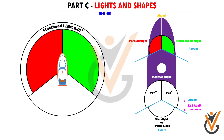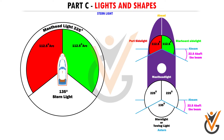Side light: a red light on the port side and a green light on the starboard side, each showing an unbroken light over an arc of 112.5 degrees and so fixed as to show the light from right ahead to 22.5 degrees abaft the beam on its respective side. Stern light: a white light placed at the stern of the vessel, showing an unbroken light over an arc of 135 degrees and so fixed as to show the light 67.5 degrees from right aft on each side of the vessel. All-round light: a light showing an unbroken light over an arc of 360 degrees.